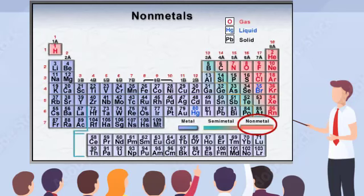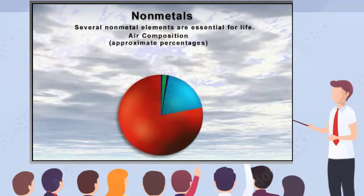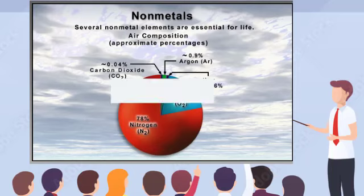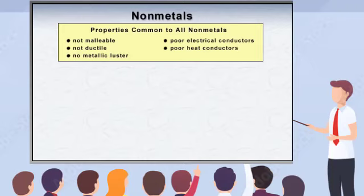You interact with familiar non-metal compounds and mixtures, such as glass, wood, and stone, every day. Non-metal elements play an even more critical role in your life. For instance, the elements oxygen and nitrogen are the primary components of the air you're breathing as you work through this program. Non-metal elements are not malleable or ductile. They do not possess metallic luster, and most are poor conductors of heat and electricity.